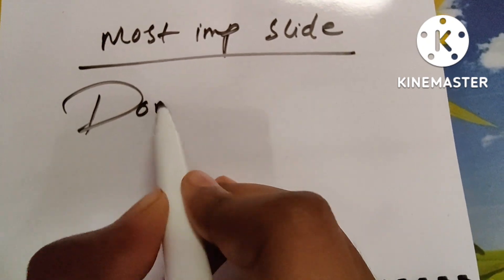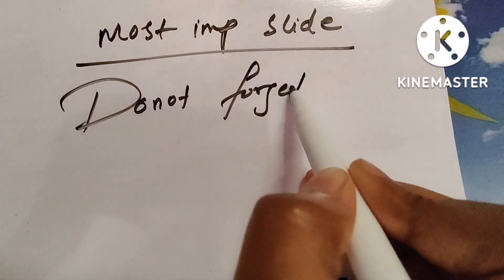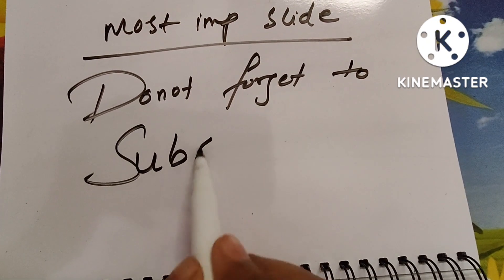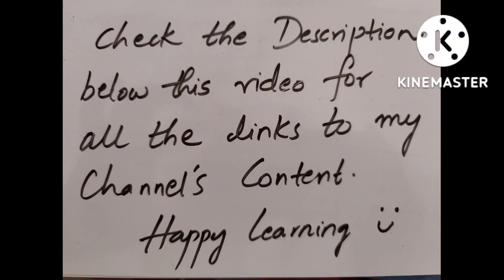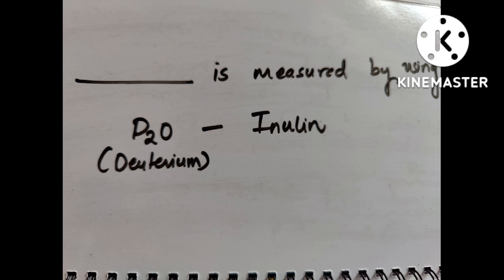If you're new to this channel, please like, subscribe, and comment. There's a question on the last slide — don't miss it. We also have a Telegram channel for doubts. Here's the question: which component is used by measuring deuterium minus inulin? Comment your answers below.